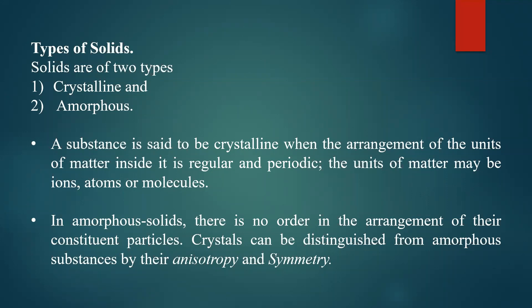Another important property of crystals is that they are distinguished from amorphous substances by their anisotropy and symmetry. Crystals definitely have symmetry. Symmetry means identical parts corresponding to certain axes or about certain planes. A simple example is the human body, which is symmetric with respect to the plane passing through the center — the left part is exactly identical to the right part.